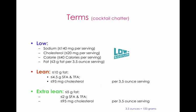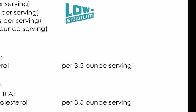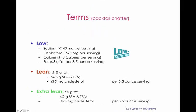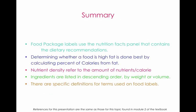Here are some other terms helpful to know. When we talk about 3.5-ounce servings, particularly pertaining to meat, cheese, and animal products, we're usually referring to 100 grams of a serving. In summary: food package labels use nutrient panels containing the latest dietary recommendations. To determine whether a food is high in fat, you calculate the percent calories from fat. Nutrient density refers to the amount of nutrients per calorie. Ingredients are listed in descending order by predominance of weight, and there are specific definitions of terms that can be used on food labels.